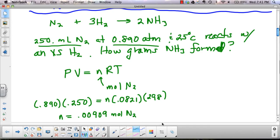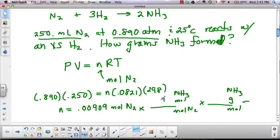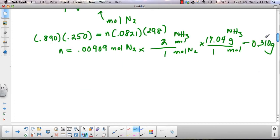And now to finish the problem, I have to go from moles of nitrogen to moles of ammonia. So I'm going to do my mole ratio, moles of N2 to moles of NH3. And then I'm going to change moles to grams, moles to grams of NH3. So if we look at our equation, our coefficients are going to be 2 over 1. And ammonia weighs 17.04 from the periodic table. And this comes out to be 0.310 grams.